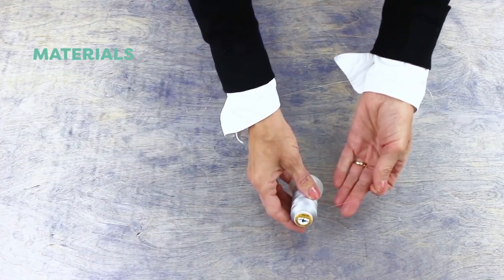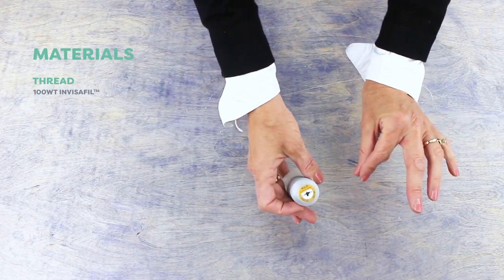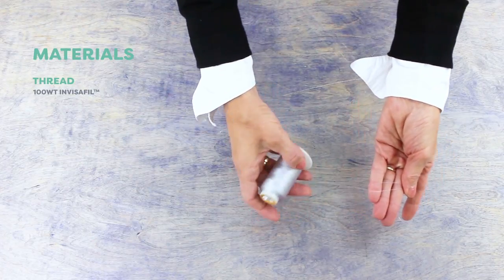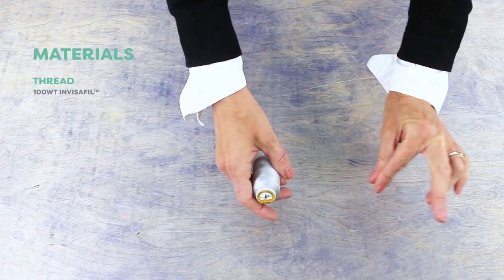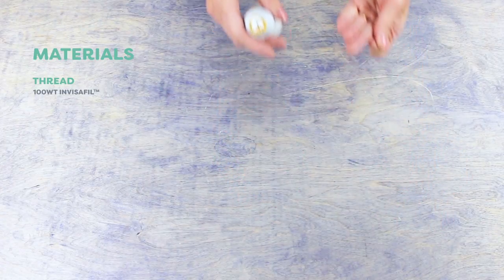So here is what you'll need. First you'll want to choose the right thread. I'll be using a 100 weight poly thread called Invisifil which is going to blend really well in the fabric so you don't even see it. And because the thread is so fine, it will stitch more easily through the thin fabric, resulting in fewer puckers.